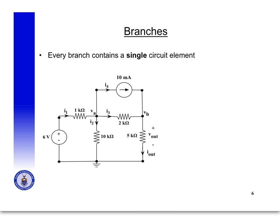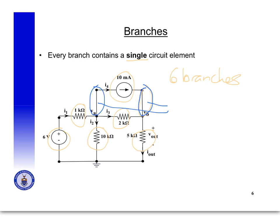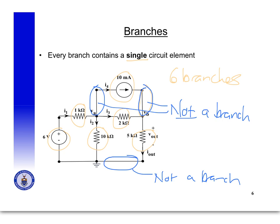Now I'm going to deal with some more terminology. The first term is a branch. A branch contains a single circuit element — it's basically a single circuit element. In this case we can see that this circuit has six branches. Note that a piece of the circuit that doesn't contain an element is not a branch — it's just drawn in there for convenience to make the circuit look neater.